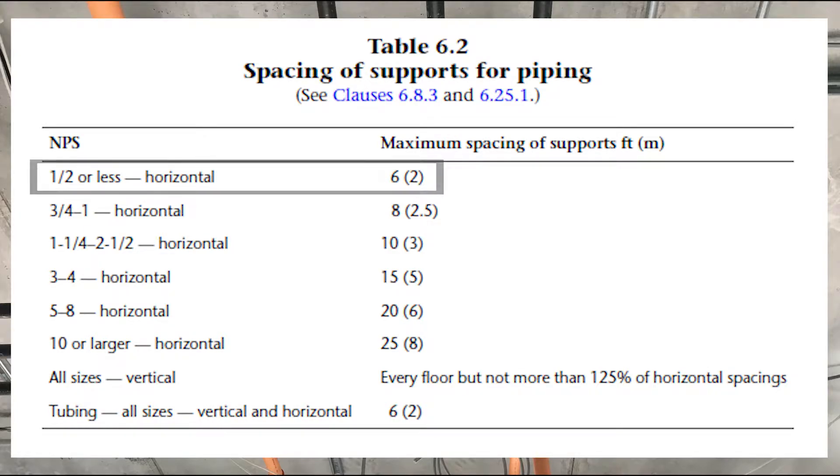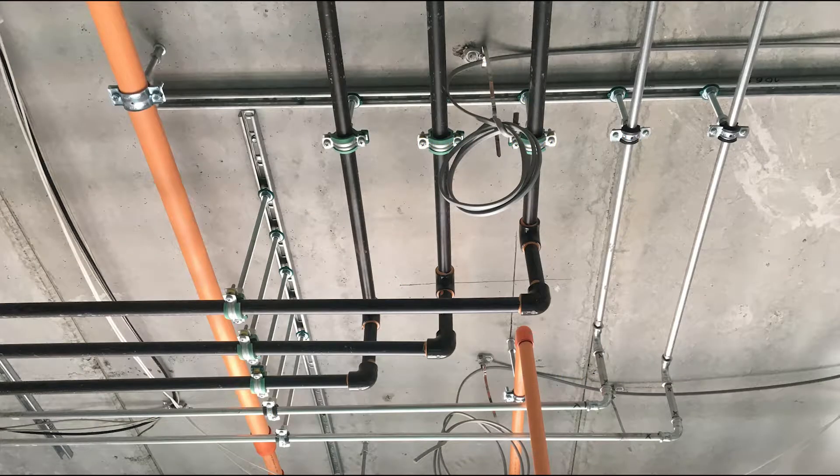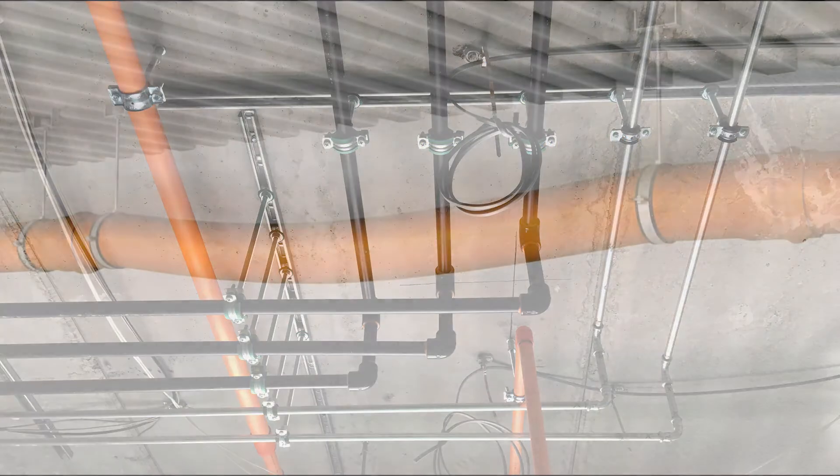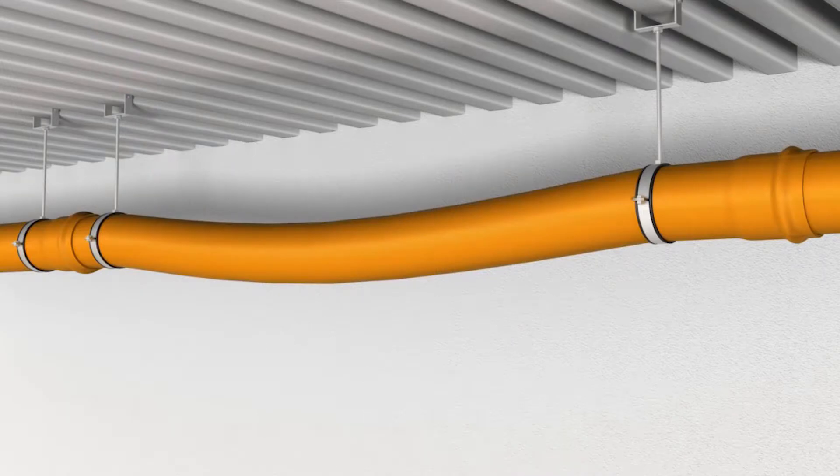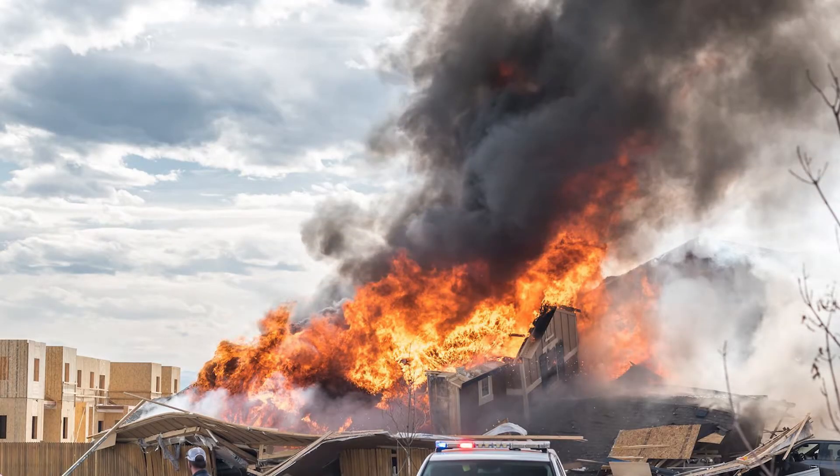For example, half inch black iron pipe requires supports every six feet. The reason for supporting pipe is simple: we don't want too few supports causing the pipe to sag or deflect. That puts undue strain on the fittings and could cause them to fatigue and break. A ruptured gas line in a house is serious.